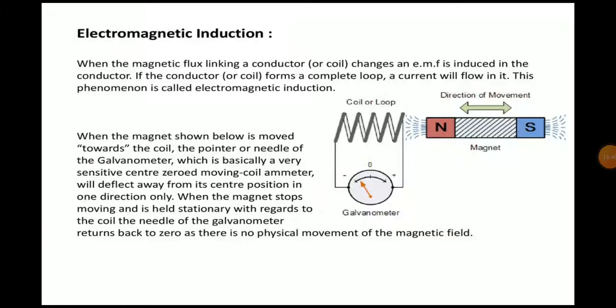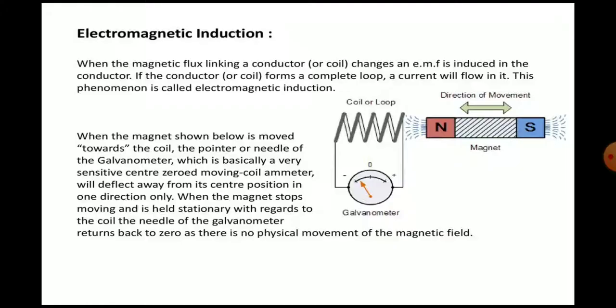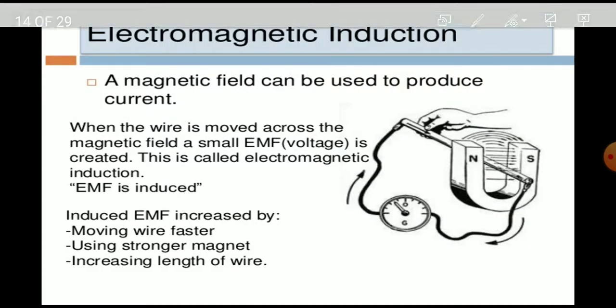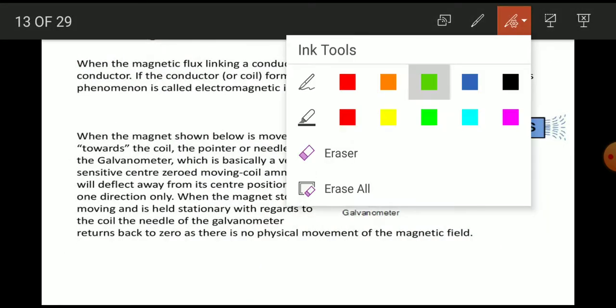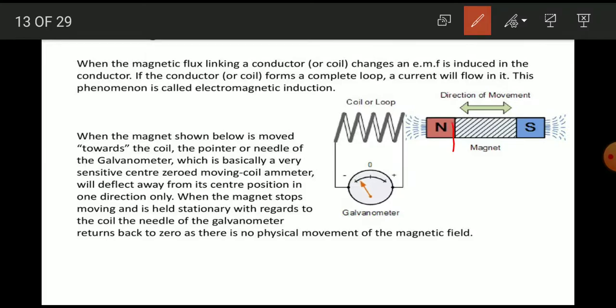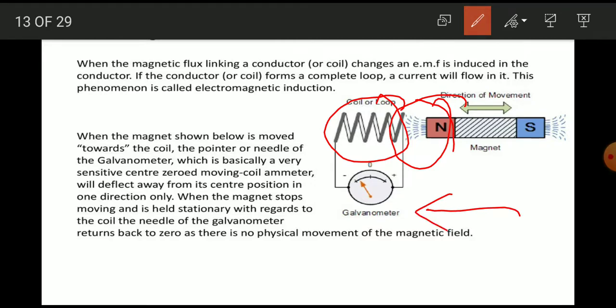Electromagnetic induction: when the magnetic flux linking a conductor changes, an EMF is induced in that conductor. If the conductor forms a complete loop, a current will flow in it — this phenomenon is called electromagnetic induction. For example, if a magnet is brought closer to a loop, there will be a change of flux.